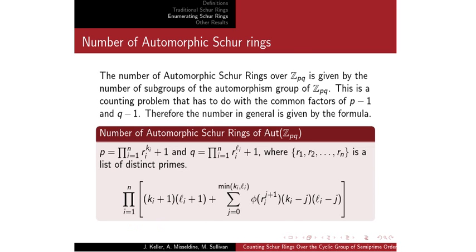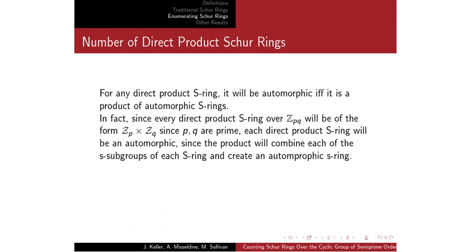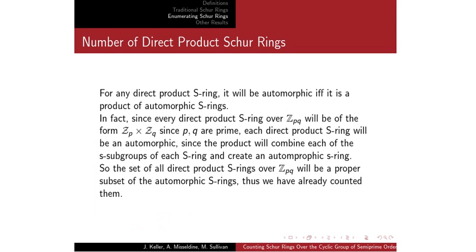Moving on to the direct product ones: it's actually very nice because any direct product S-ring is automorphic if and only if it's a product of automorphic Schur rings. We get that every direct product Schur ring is going to be an automorphic Schur ring, since the product combines the S-subgroups of each S-ring and each will be automorphic. So we don't have a separate formula — the direct product Schur rings are a proper subset of the automorphic Schur rings, and we've already counted three of the four types.